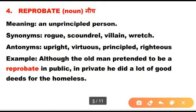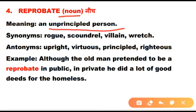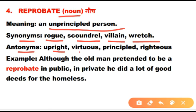Number four is reprobate. Reprobate is a noun meaning neech — an unprincipled person, someone who has no principles in life. Synonyms: rogue, scoundrel, villain. Antonyms: upright, virtuous, principled, righteous.